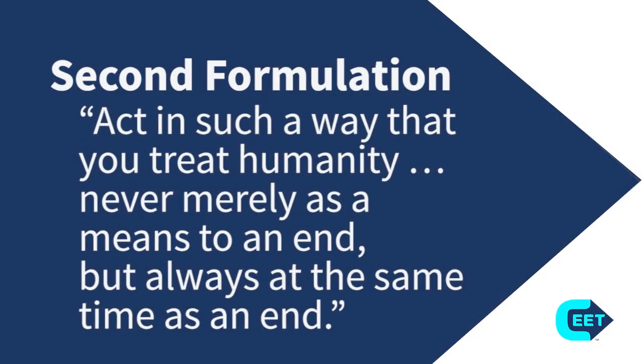The second formulation of the categorical imperative is: act in such a way that you treat humanity never merely as a means to an end, but always at the same time as an end. This means don't do actions that treat people as a means to an end. Kant wants us to understand that people are ends in themselves — they have moral value. You have a perfect duty not to use people as a means to an end, as doing so would fail to respect that moral value.